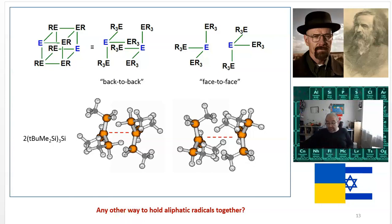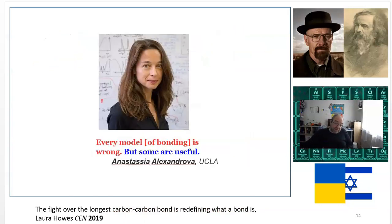This brings me back to the slide I started with because we only spoke about the first sentence, but there's a second sentence here. It says that some bonding models can be useful. How can this model be useful? To answer I will first show some new results in the chemistry of frustrated radical pairs published in the last few months.